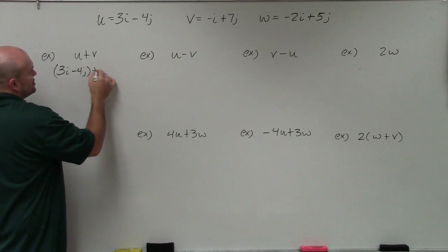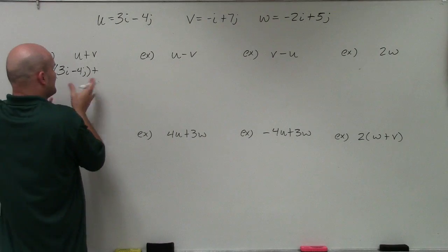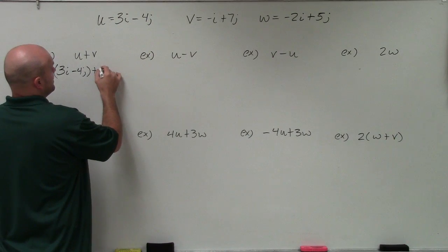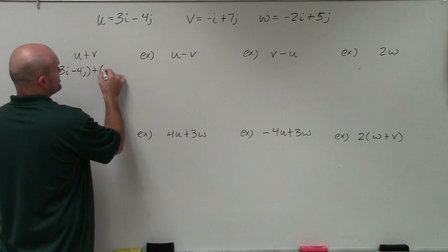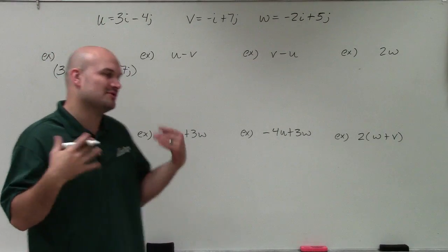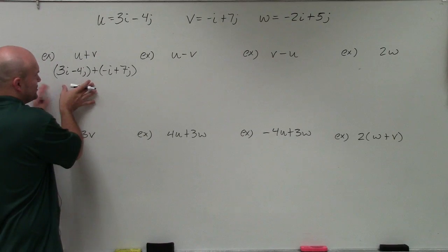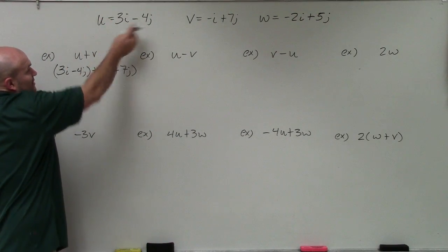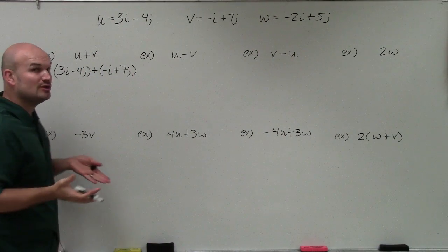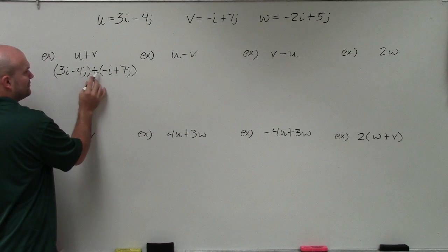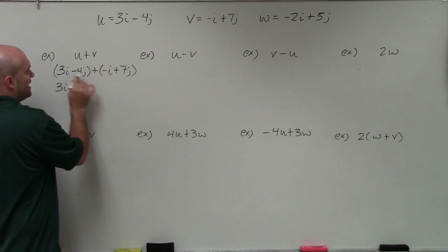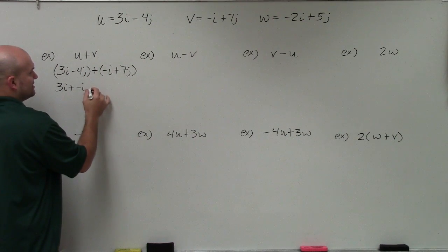I'm going to put this in parentheses just so we keep everything separate. That's not really important for addition, but it's very important for subtraction. Then I'm going to add that to v, which is negative i plus 7j. We don't really need the parentheses for addition, so I'll get rid of them in the next step. We can only combine like terms, so I have 3i plus negative i, and then negative 4j plus positive 7j.